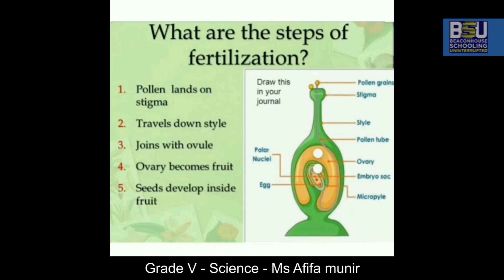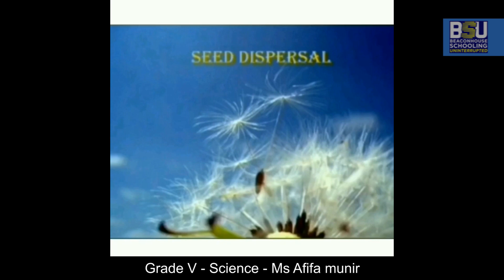Once pollination is done, then comes fertilization. The pollen lands on the stigma, travels down the style, and joins the ovule. The ovary becomes the fruit and the seed develops inside the fruit. These are the steps of fertilization.